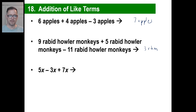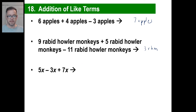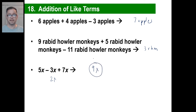This is what we're going to be doing. You've got 5x, you've got negative 3x — or 5x minus 3x — then you have plus 7x. Those are all like terms. If you have 5 of something and you subtract 3 of the same something, you're going to have 2 of something. Then if you add 7 of the same thing, you're going to have 9 of the same thing. So: 9x. That's how you add like terms.